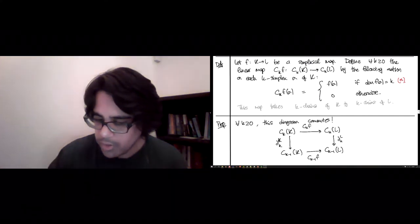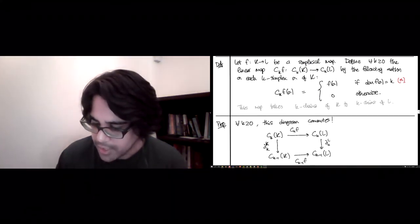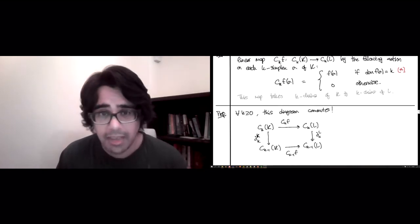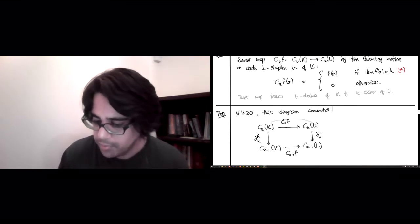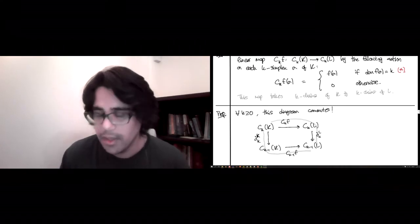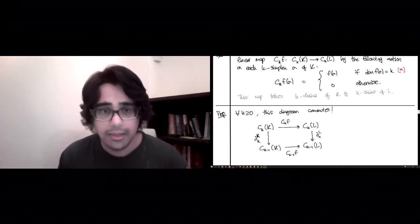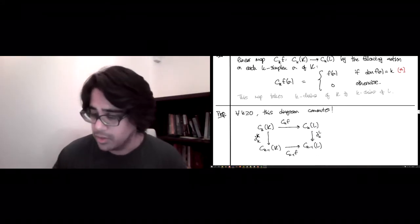And if you don't know what this diagram commutes means, all this is saying is that all paths from the k chains of K to the k-1 chains of L, there are two of them. There's one that goes up to the right and then down, and then there's one that goes down and then to the right. These two paths are going to give us the exact same linear map from the k chains of K to the k-1 chains of L. That's all this is doing.